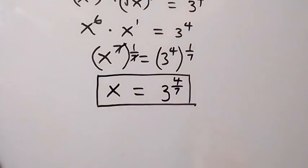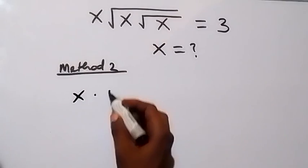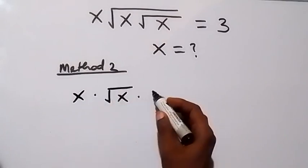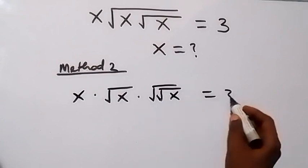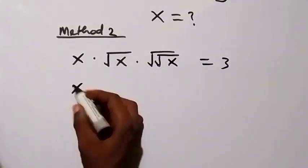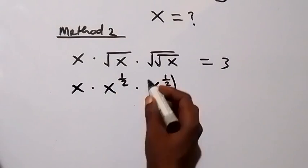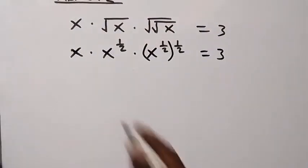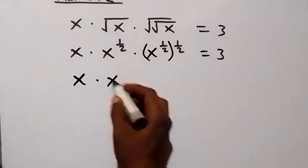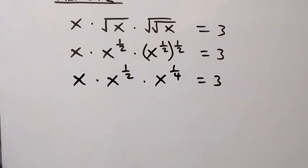Now for Method 2. From what we are given, we can separate this as x multiplied by root x, then multiplied by root root x — that's root of root x. This equals 3. Here we rewrite as x times x raised to power one half, then times x raised to power one half, also raised to power one half. This gives us x times x raised to power 1 over 2 times x raised to power 1 over 4 equals 3.